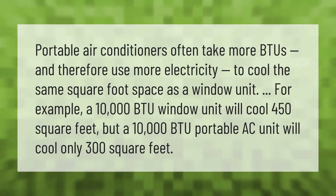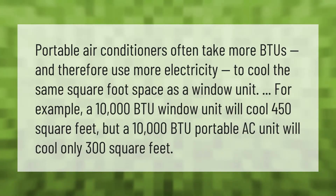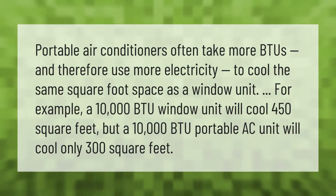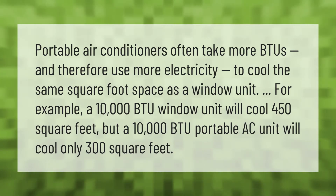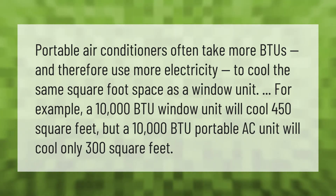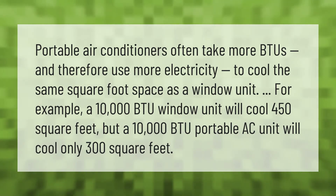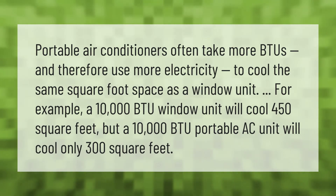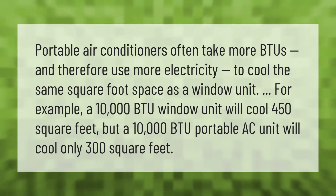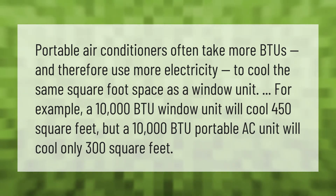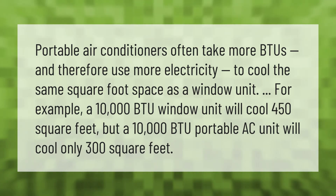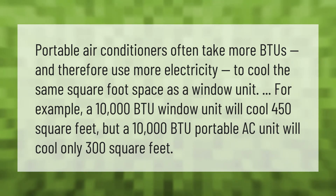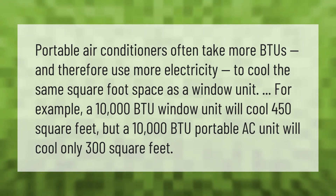Portable air conditioners often take more BTUs and therefore use more electricity to cool the same square foot space as a window unit. For example, a 10,000 BTU window unit will cool 450 square feet, but a 10,000 BTU portable AC unit will cool only 300 square feet. Thank you for watching — please subscribe and hit the bell notification.